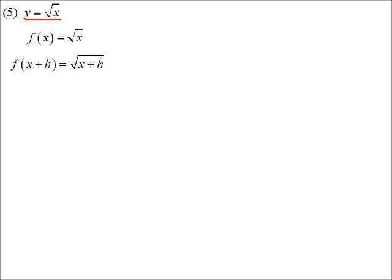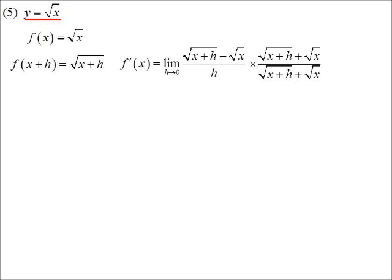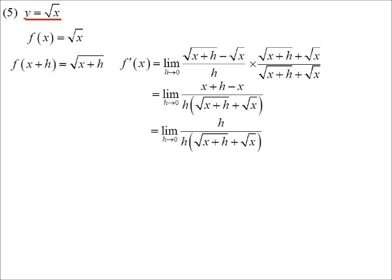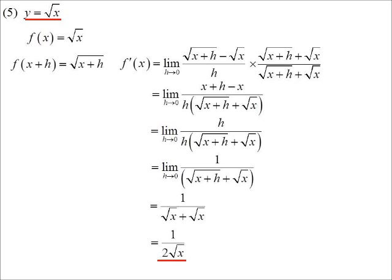Let's see if it works for fractions as well. y = √x. So f(x) = √x and f(x+h) = √(x+h). Subbing into the formula, we're going to rationalise the numerator — same idea as rationalising the denominator, but we multiply top and bottom by the conjugate: √(x+h) + √x. On the top, difference of two squares gives x+h minus x. The h outside cancels with the h in the denominator. Substituting h approaching zero, we get 1 on (√x + √x), which is 1 on 2√x.